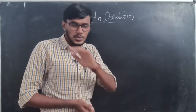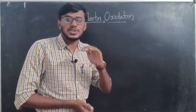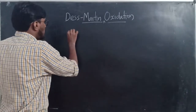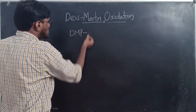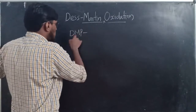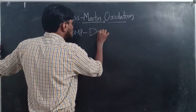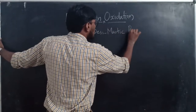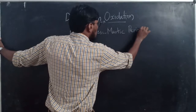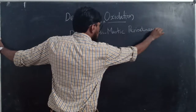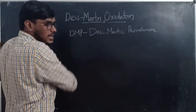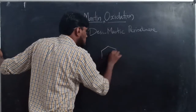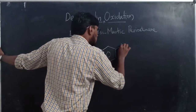In this oxidation reaction there is a reagent called DMP. DMP stands for Dess-Martin periodinane. This is the reagent used here — Dess-Martin periodinane.